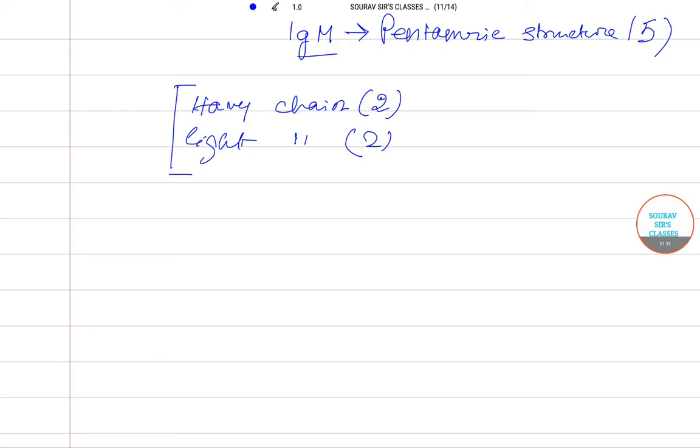Every typical antibody has two heavy chains and two light chains. Now, if we want to calculate the total weight, we can do it this way: 5 times [2 times the weight of heavy chain plus...